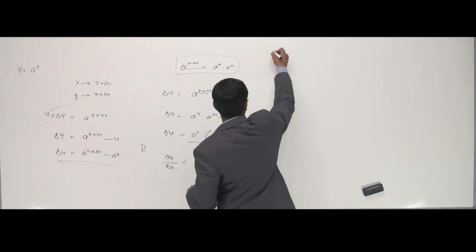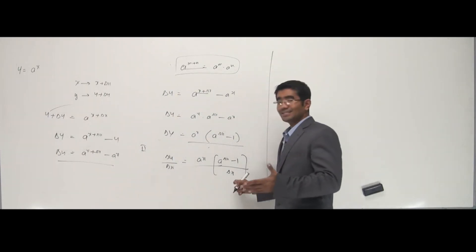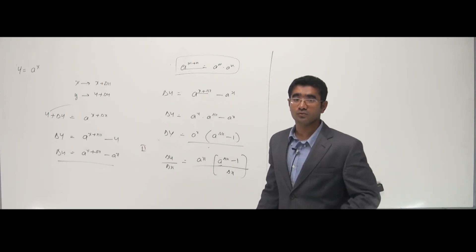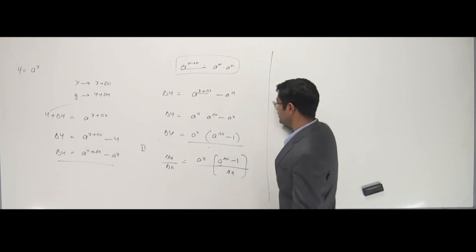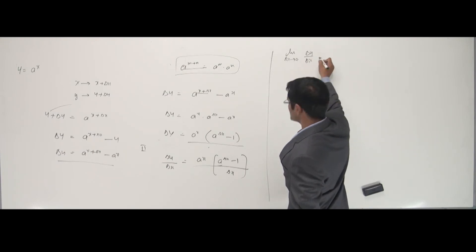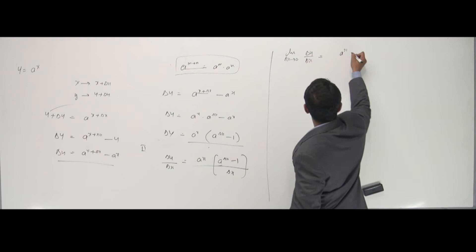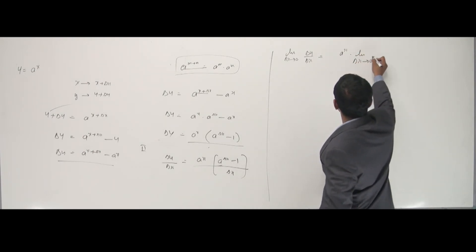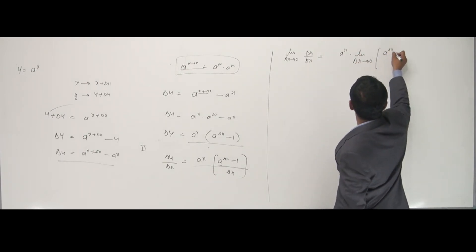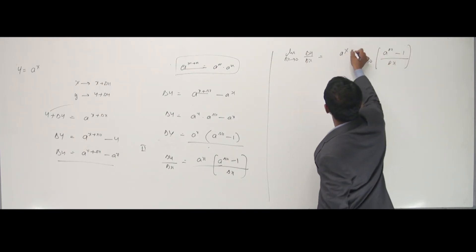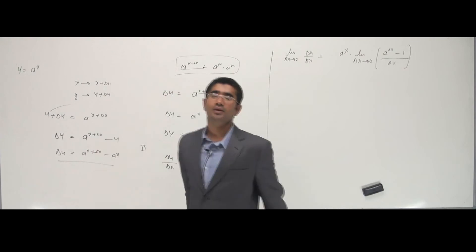The third stage is all about applying limits. Since I cannot cancel delta x directly, I can use a formula to remove it. As limit of delta x tends to 0, delta y by delta x is given as a to the power x, into the limit of delta x tends to 0 of (a to the power delta x minus 1) by delta x.